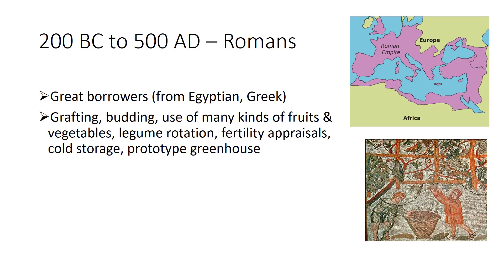The Roman Empire soon followed the Greek civilization and lasted for about a thousand years. The Romans were fascinated with practical agriculture, which was an integral part of their economy. Though they produced little in the way of new discoveries, they made great improvements, copying and borrowing from the peoples they conquered. Roman agricultural writings include information on grafting and budding, cultivated varieties of fruits and vegetables, legume rotation, fertility analysis, and methods for placing fruits in cold storage.